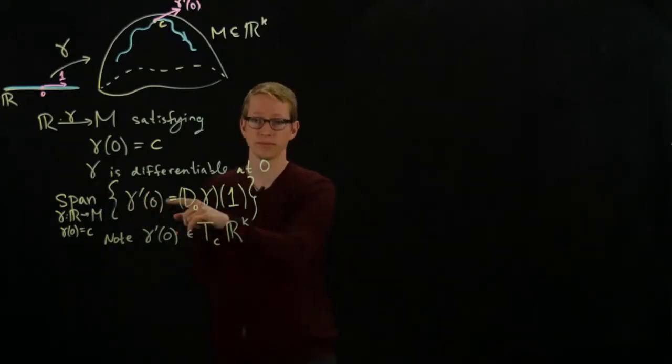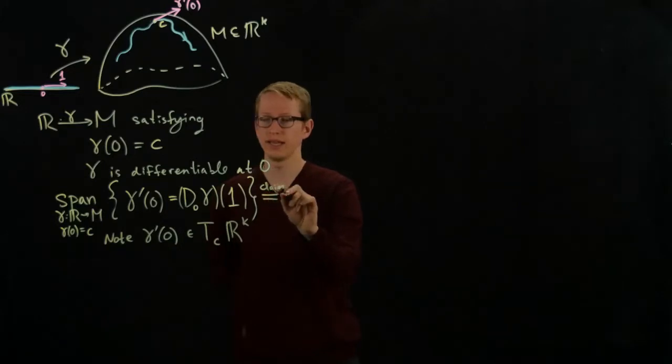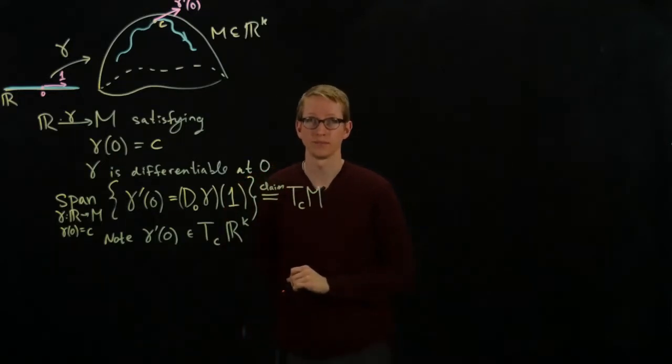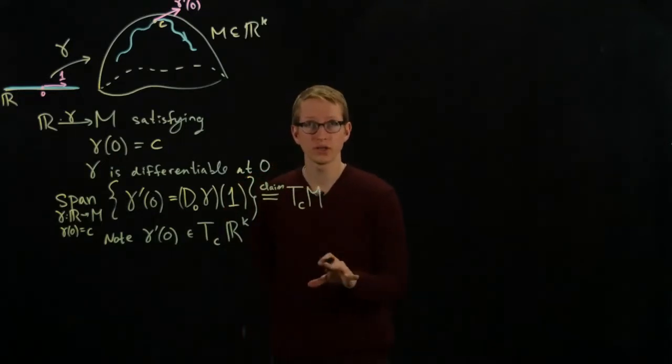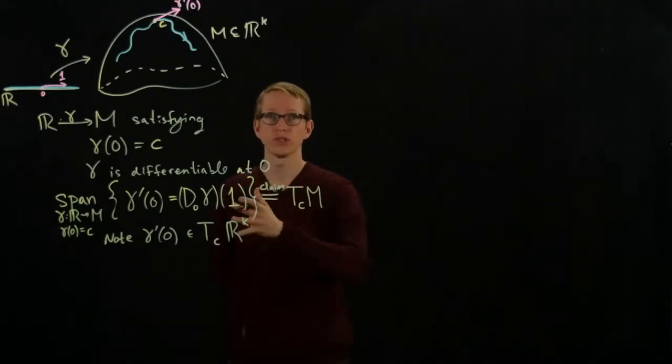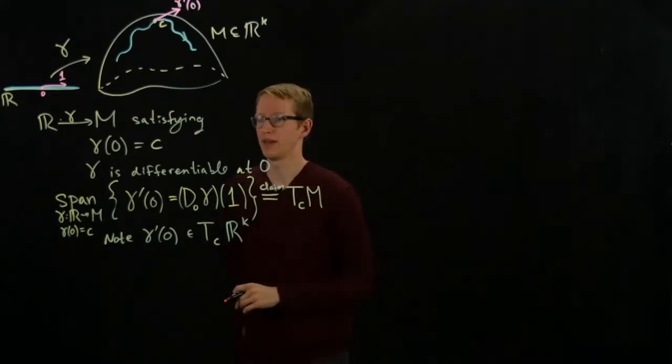So note that gamma prime 0 is an element of the tangent space of RK at the point C. And the claim is that this, let me write this explicitly, the claim is that this equals the tangent space of the manifold at the point C. So we can look at all of these curves and then take their derivatives, and if we do this for all such possible curves, then we indeed get the tangent space of M at C.